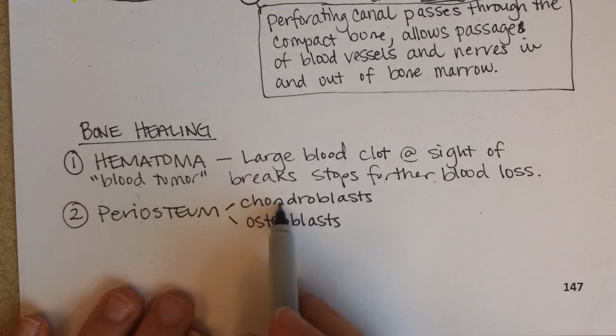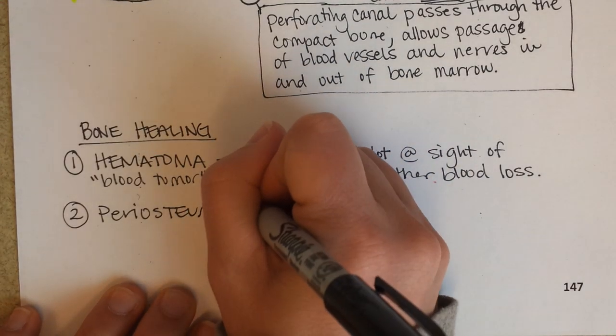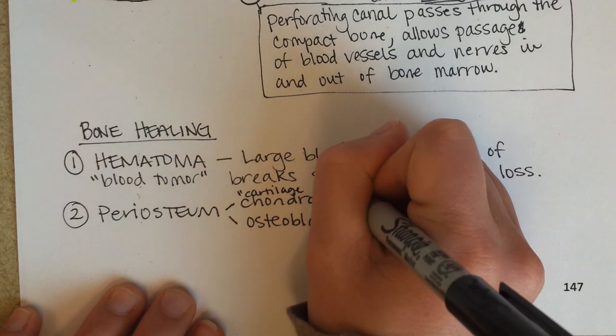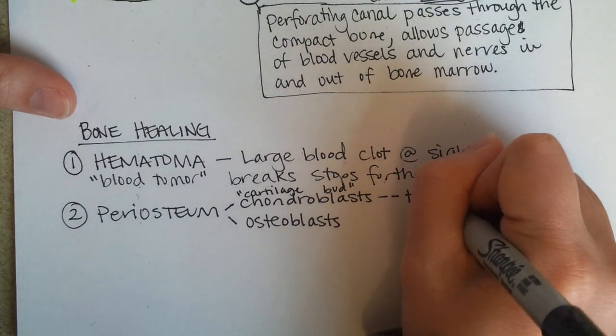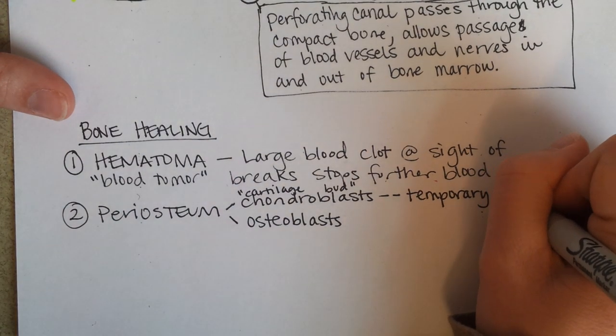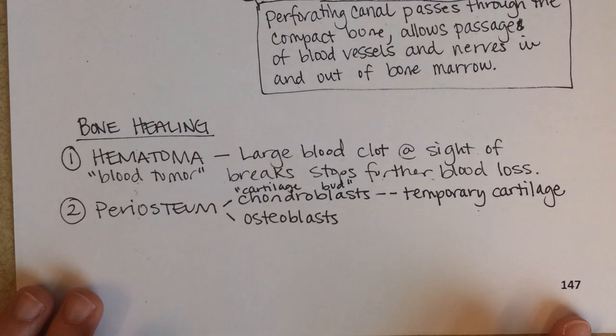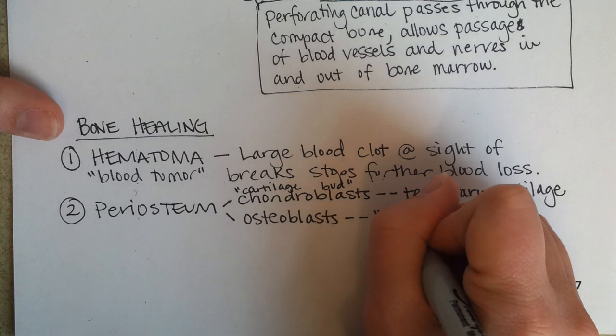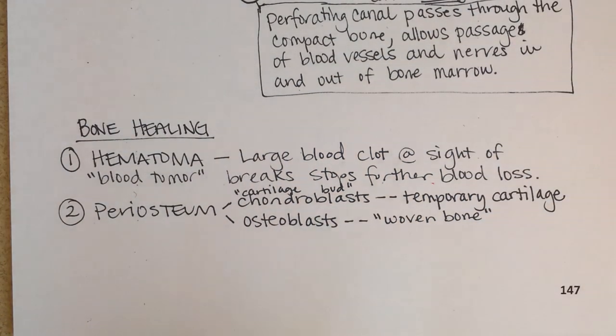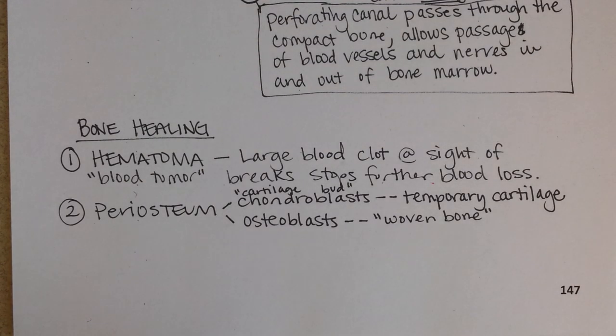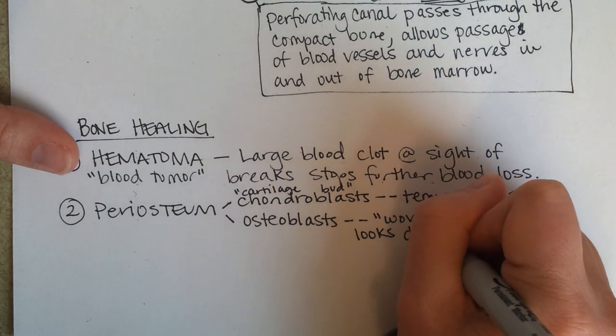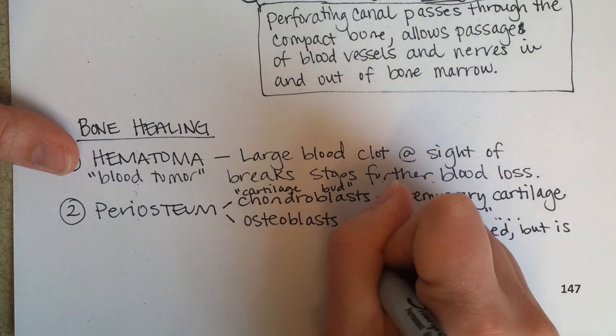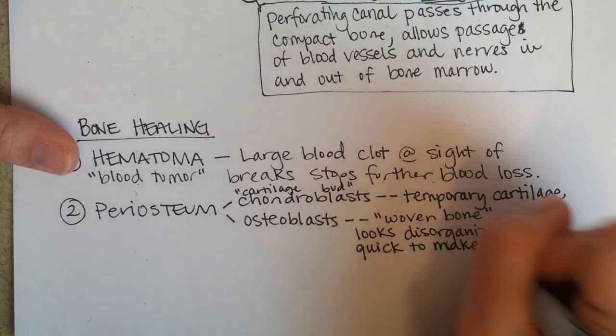The periosteum is that membrane around the outside of the bone. And it stimulates both chondroblasts and osteoblasts. Now chondro, what do you think that means? It means cartilage bud. Cartilage can develop quicker than bone. And so it's like a temporary stopgap and supportive structure. And this cartilage won't be around forever though. It's just temporary. And then the osteoblast will quickly make something called woven bone. Which is not, if you were to look at it, it doesn't look anything like compact bone. It's not dense. And it's not really like trabecular or spongy bone either. It looks disorganized. But it's really quick to make.